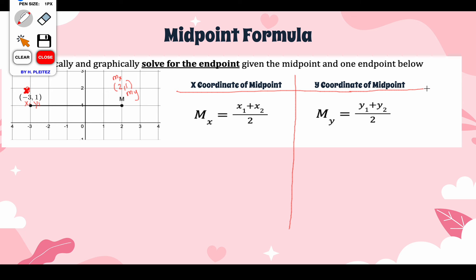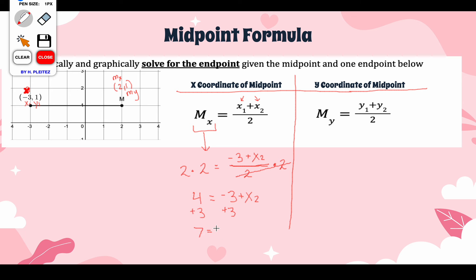In the last two examples we substituted in x1 and x2 to find Mx — the x-coordinate of the midpoint. But now we actually have the x-coordinate of our midpoint. So: 2 = (x1 + x2) / 2, where x1 is −3, but we don't have x2 yet. Multiplying both sides by 2 to clear the fraction gives us 4 = −3 + x2. Adding 3 to both sides, we get x2 = 7. This is the x-coordinate of the other endpoint.